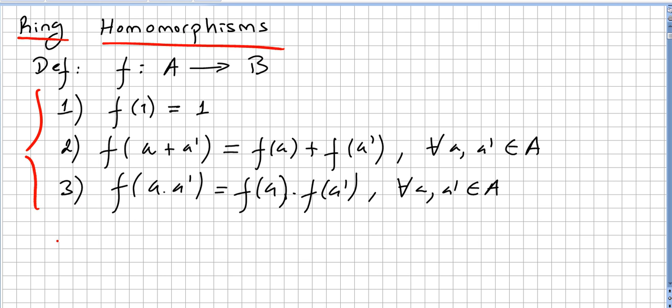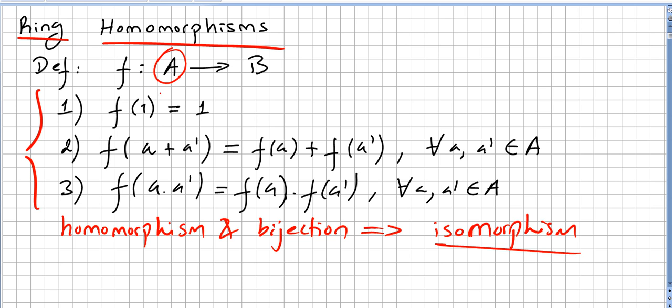So if the homomorphism is also a bijection, if we have a ring homomorphism for commutative rings and if that homomorphism is a bijection, we say that both rings are isomorphic. So we have an isomorphism.